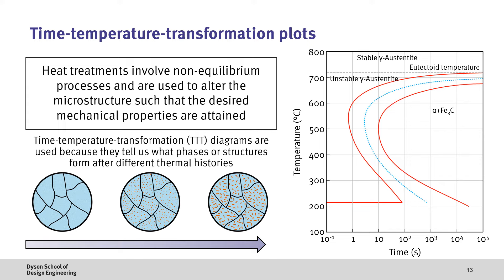First of all, we have the eutectoid temperature, where above this line, we have a stable austenite phase, and below the line, we have an unstable austenite phase. We then have several contours, which represent the point at which pearlite starts to form, and when this is finished to have 100% pearlite. At the bottom, we also see the point at which martensite starts to form.